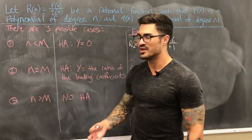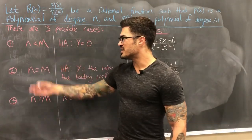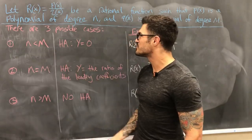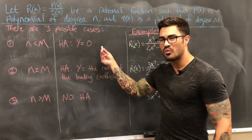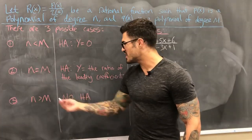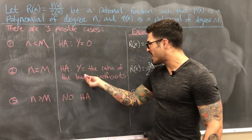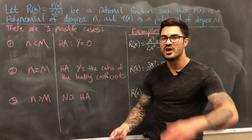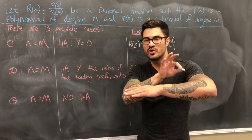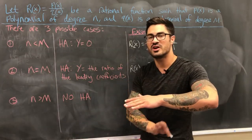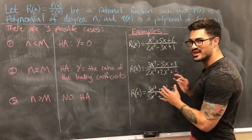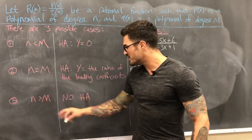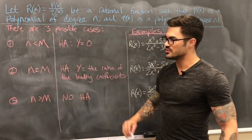Based on which case we have, we can look at a rational function and immediately tell whether it has a horizontal asymptote. Case 1: degree of numerator less than degree of denominator → horizontal asymptote at y = 0. Case 2: degrees are equal → horizontal asymptote at y equals the ratio of the leading coefficients, meaning the leading coefficient of the numerator over the leading coefficient of the denominator. Case 3: degree of numerator greater than degree of denominator → no horizontal asymptote.